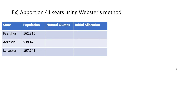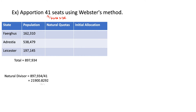Here we want to apportion 41 seats using Webster's method to three states. First we find our total population by adding up all the state populations, then find our natural divisor. We take each state population and divide it by the natural divisor to get our natural quotas. For our initial allocation we round normally: 7.4 becomes 7, 24.5 becomes 25, 9.0 becomes 9, and this adds up to 41, which works out. So we're done and we don't need to do anything else.